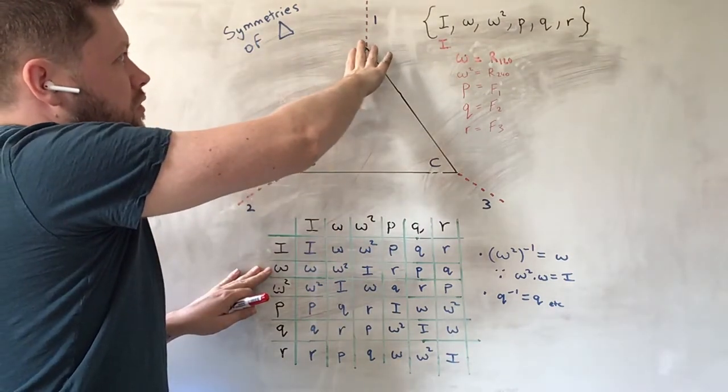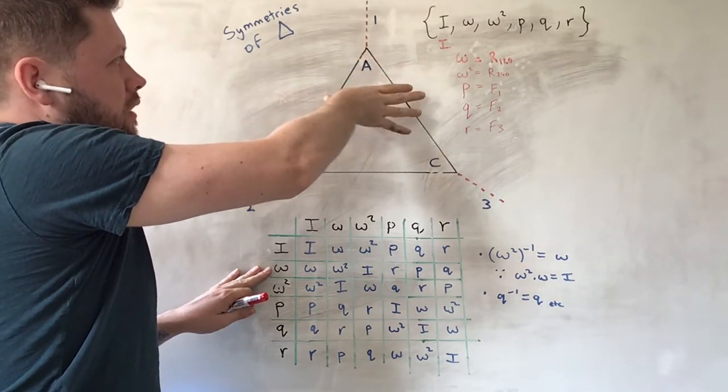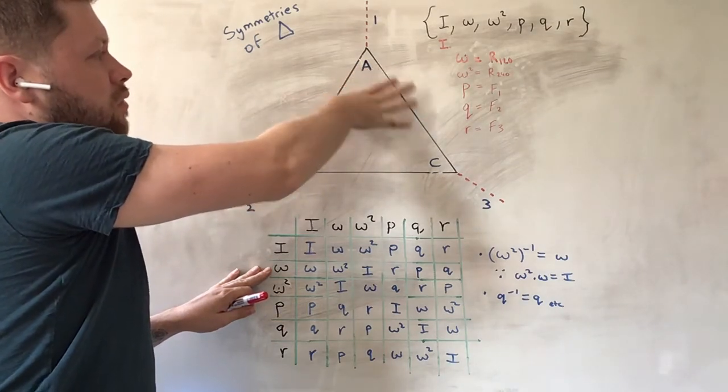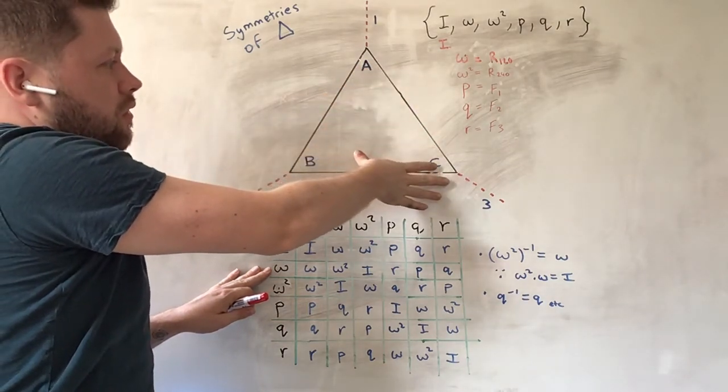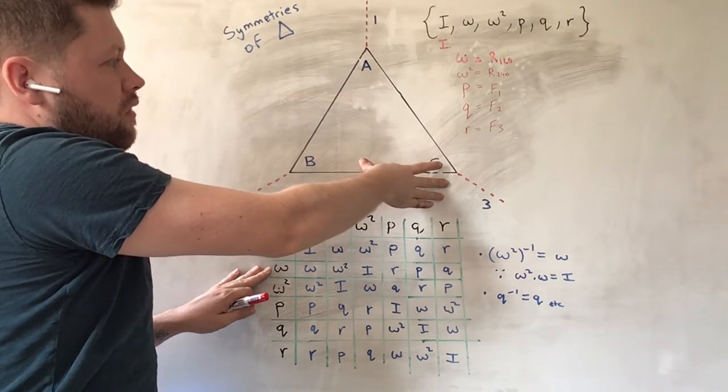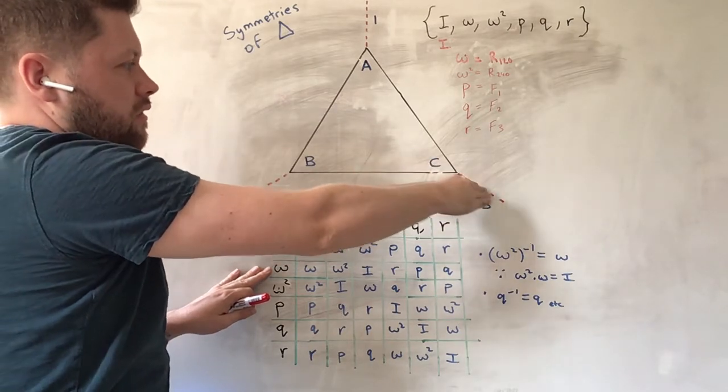So, first we move 120 degrees clockwise, say. It doesn't really matter in this instance. So, A moves to C. And then you flip it over the third axis here.